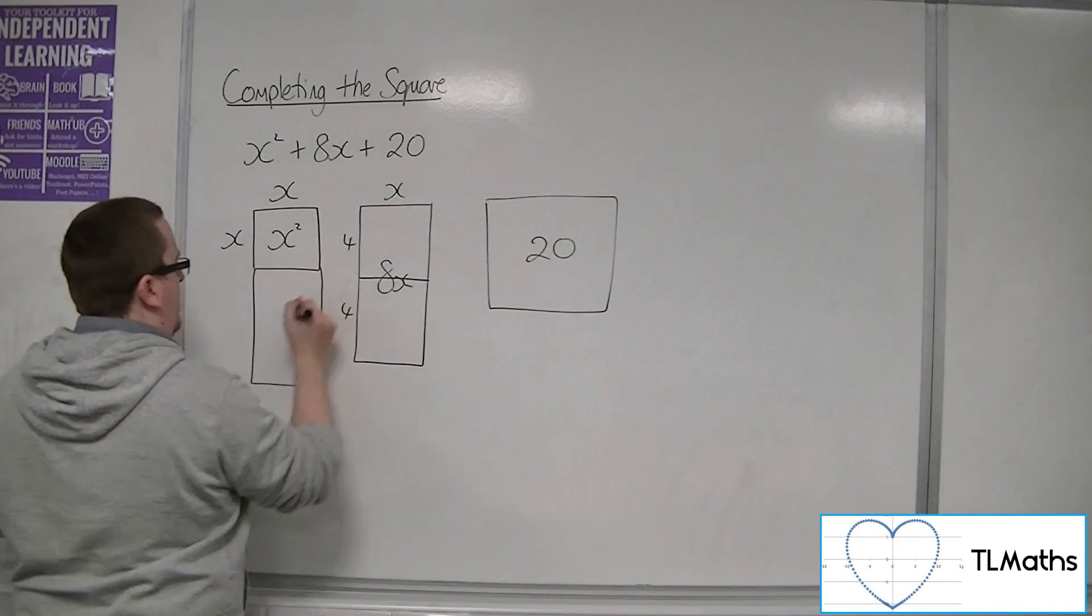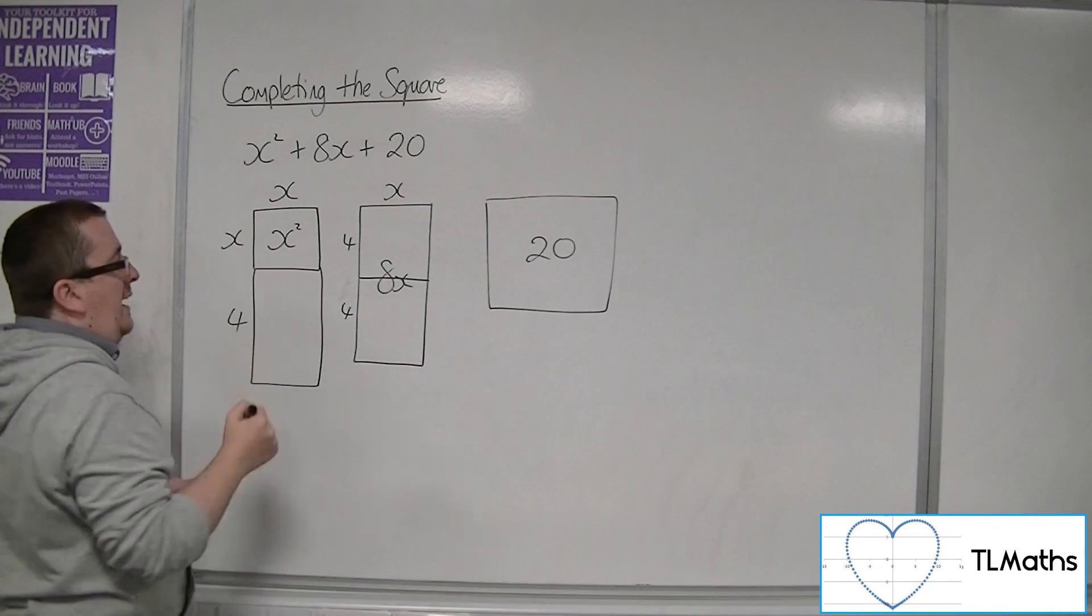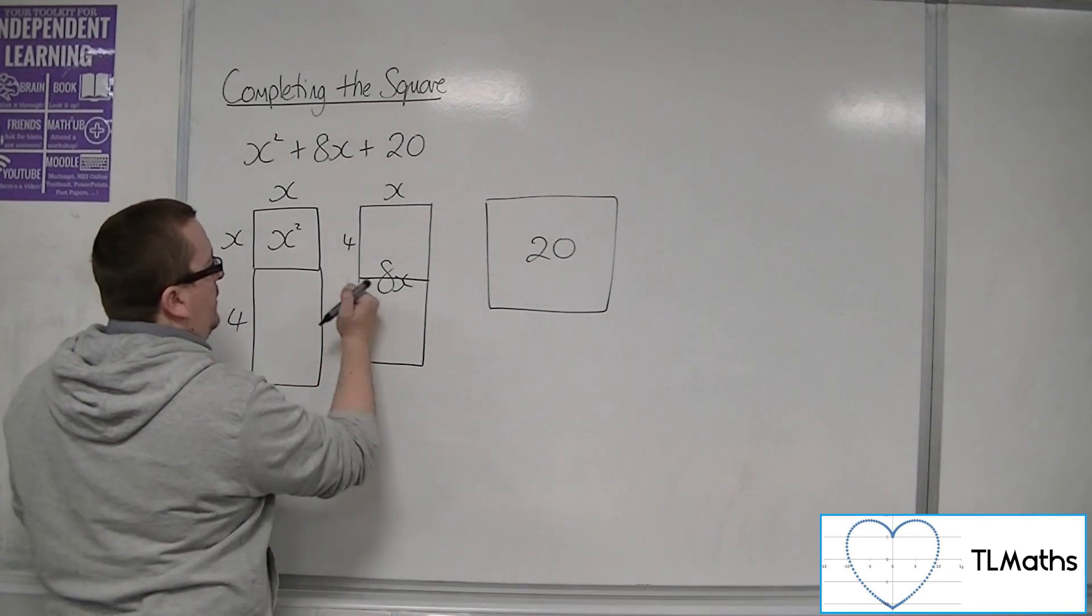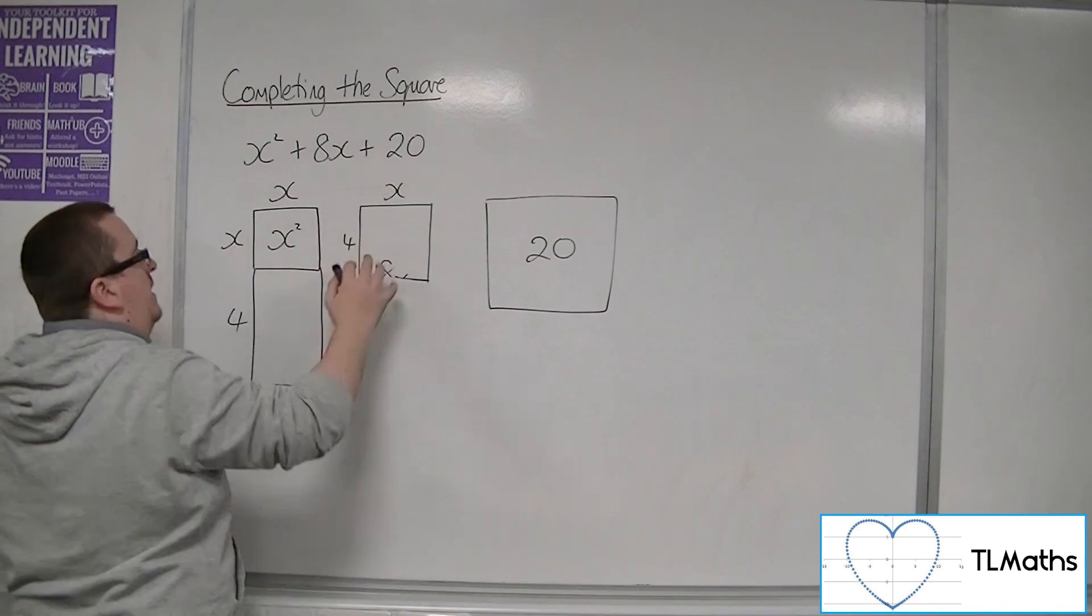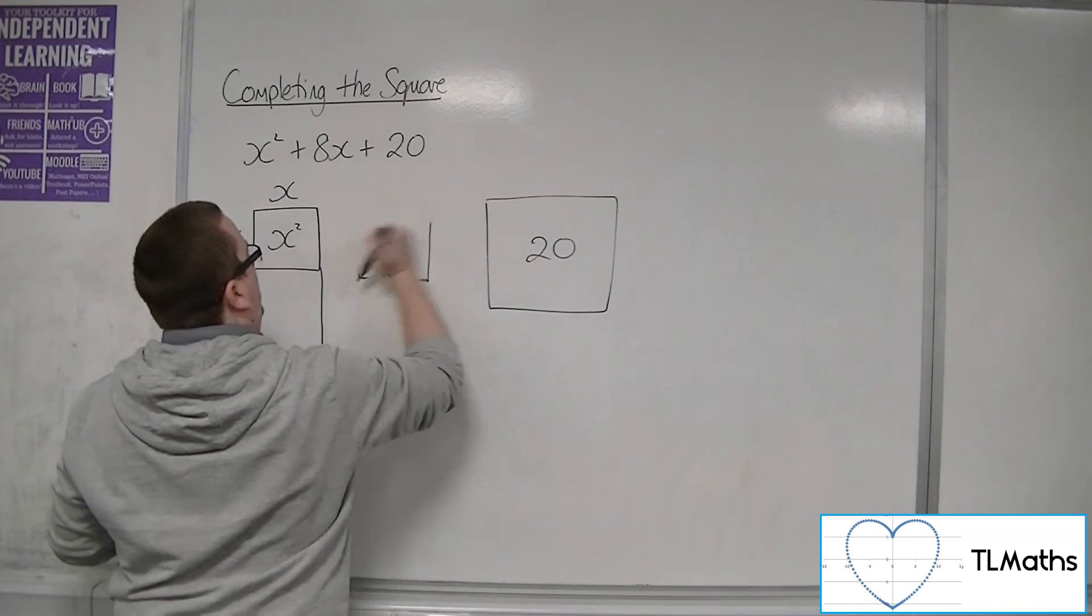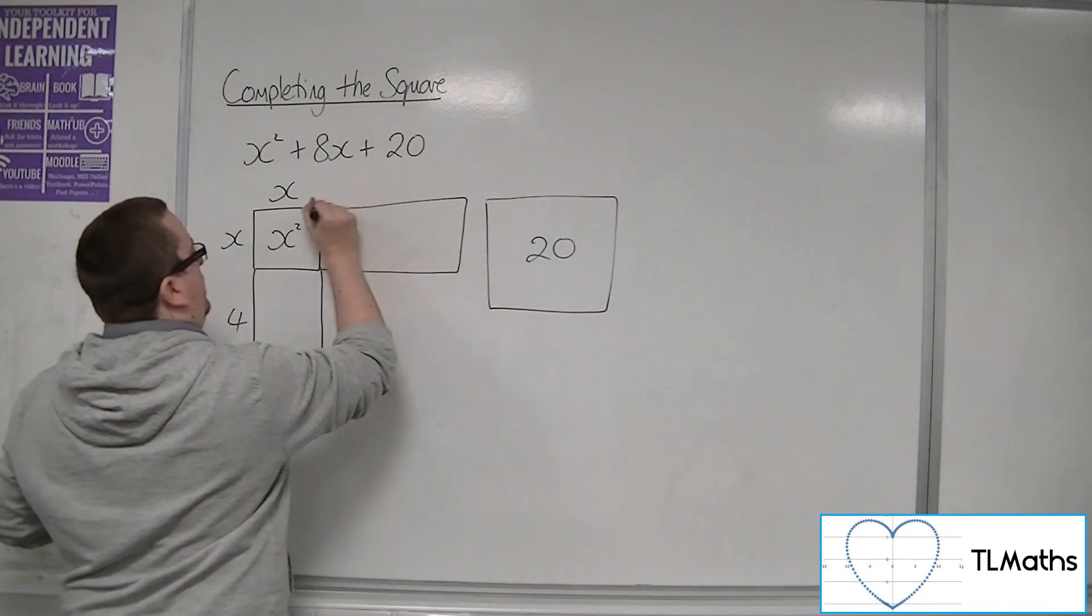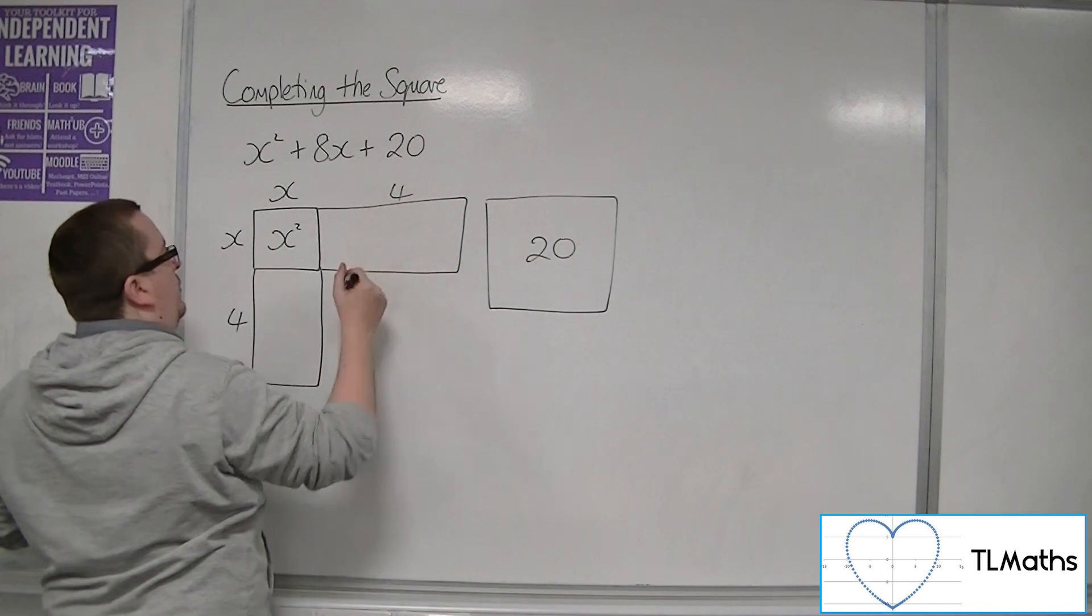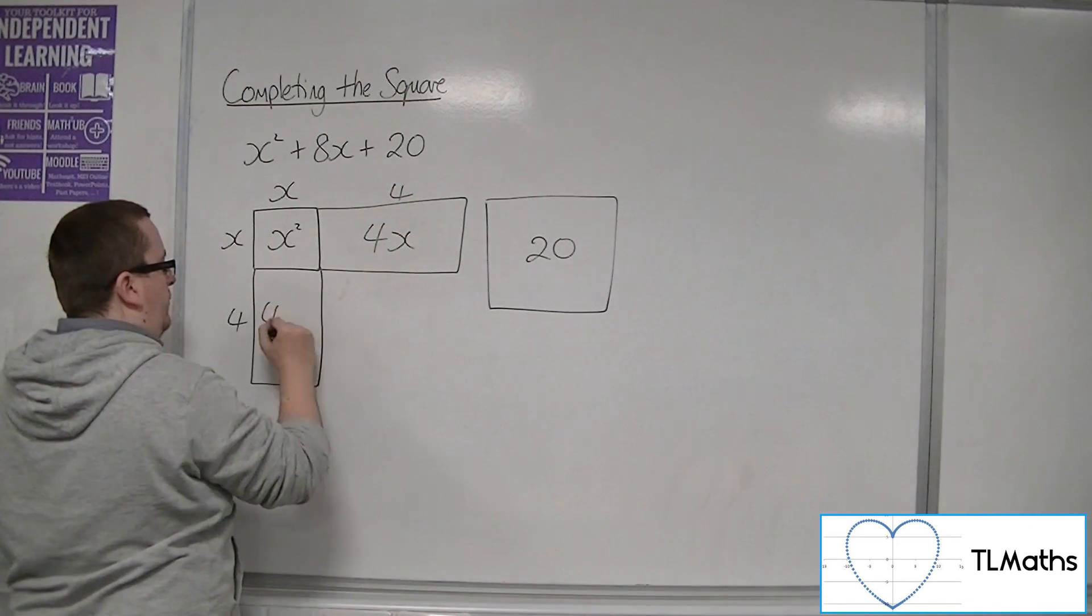So I can get rid of that bit. And then this half, I can turn and put there instead, to maintain the same dimensions. So that's 4. So this is 4x, and that's 4x.